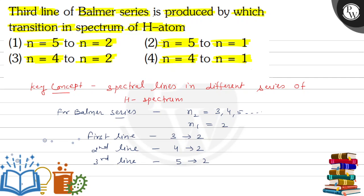Third line of Balmer series is produced by which transition? It means it is produced by n equals to 5 to n equals to 2. It means option 1 is the correct answer.